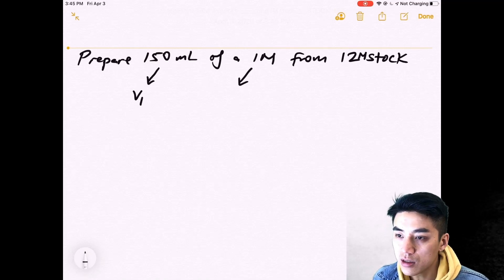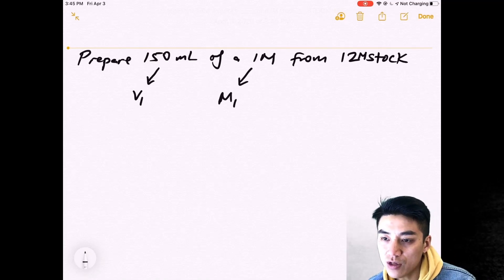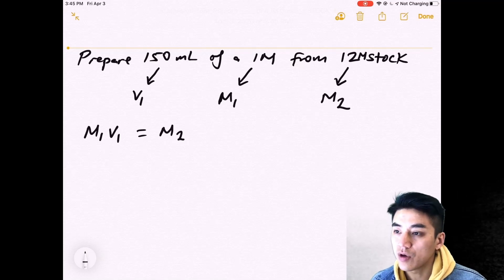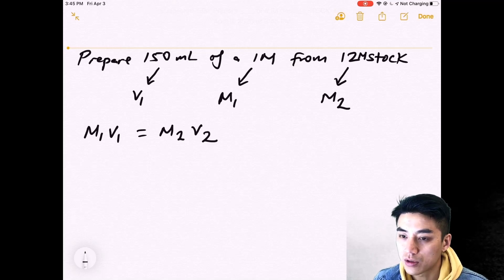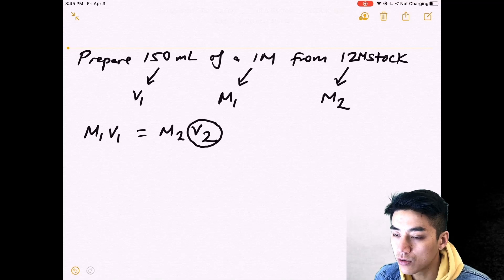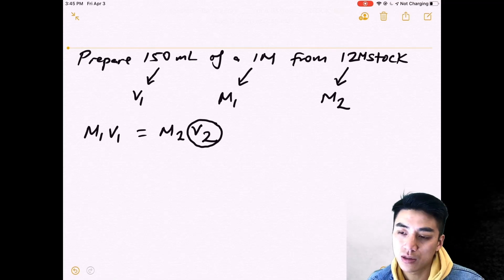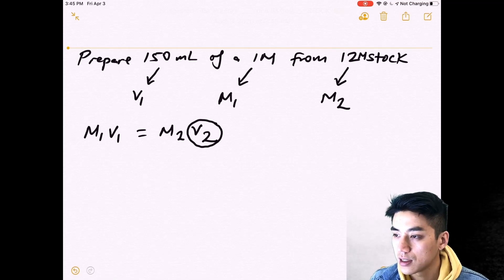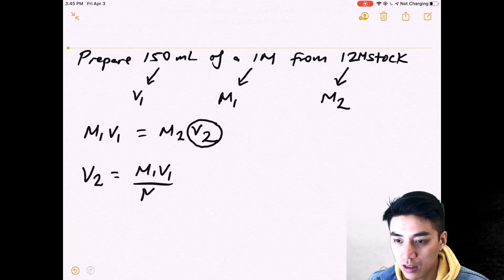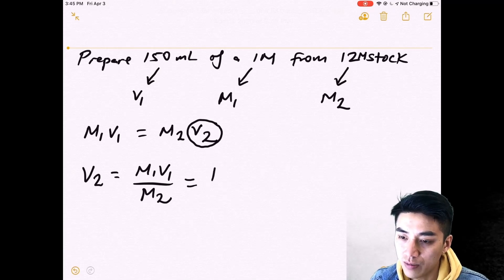So we're going to use a new equation. It's M1V1 equals M2V2. And the problem was prepare 150 mils of a 1 molar from 12 molar stock. So identify your variables. I'm going to circle V2 because that's what we're solving for. V2 tells us the amount of stock that you need. So it's algebra. Plug in M1V1 over M2.